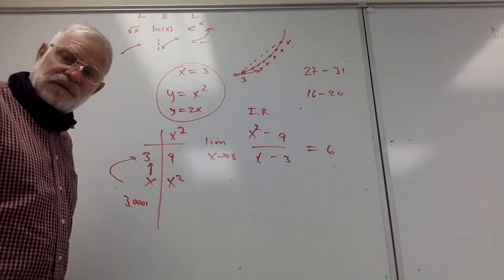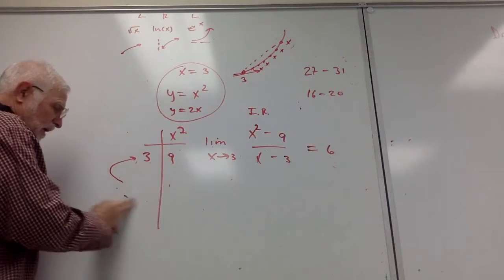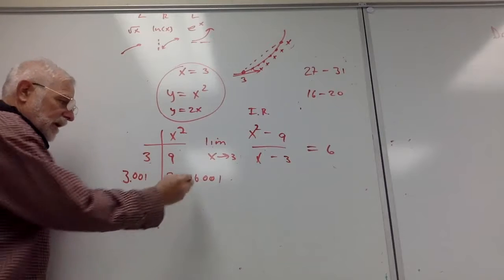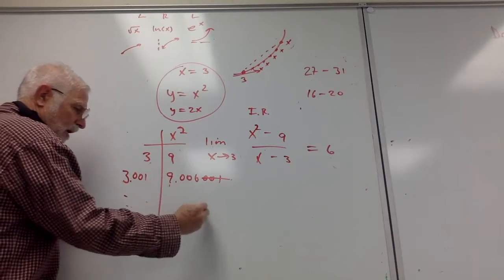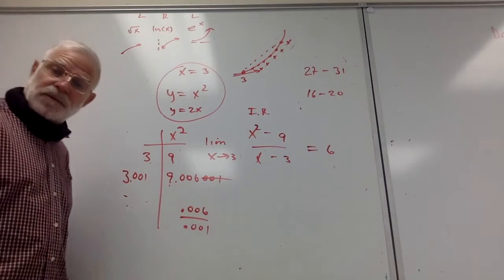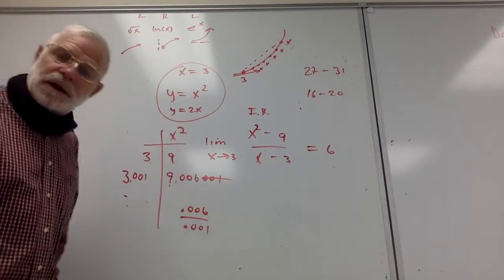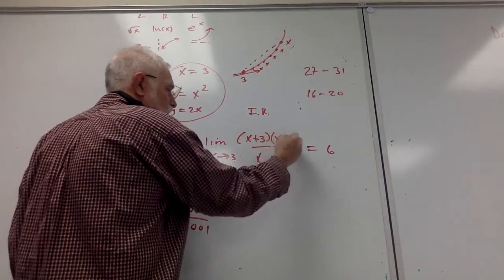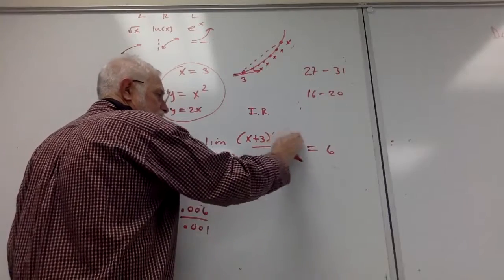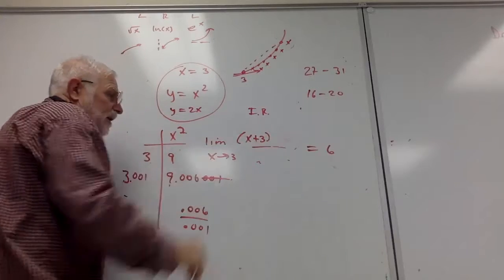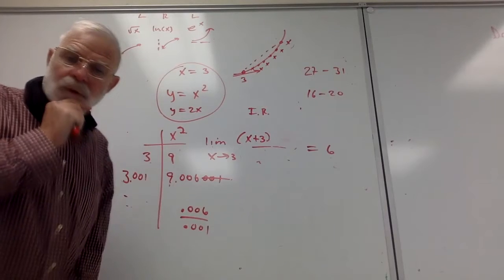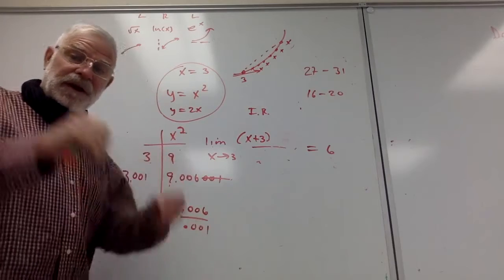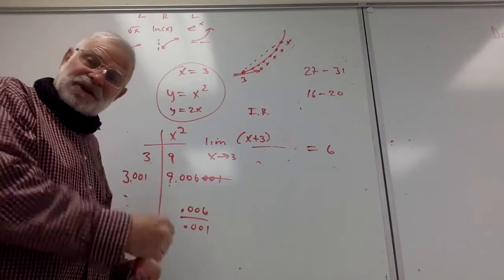Take a derivative and you know how the table values are changing. We started the term squaring 3.01, getting 9.00601. We looked at the change in y over the change in x and said that's 6 to 1. We did it with a bunch of other values and said it looks like you're doubling the x at any instant. We also showed this from the context of (x+3)(x-3), where the x minus 3 divides out, and you can put 3 in — it's 6. The whole purpose of this question is to make you see the derivative process, because the course is broken into differentiation and integration.